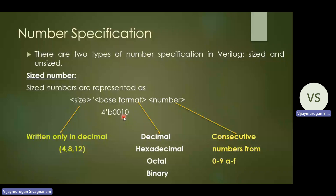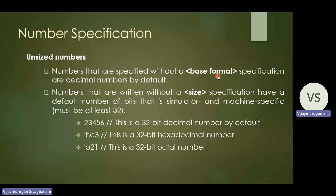Next, unsized numbers are specified without a size or base format. By default they are decimal numbers. Numbers written without a size have a default number of bits that is simulator and machine specific, but it must be at least 32 bits.